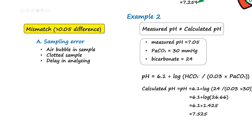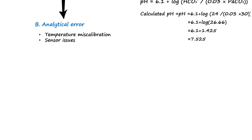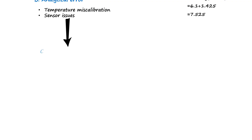If sampling error is unlikely, the next step is to consider technical problems with the ABG machine, including calibration or sensor issues. We have discussed these issues in the ABG sampling video. Finally, if technical errors are ruled out, the mismatch may be due to true pathological causes such as the presence of unmeasured acids like lactate or ketones, which can disturb the acid-base balance in ways not fully captured by the standard bicarbonate and carbon dioxide measurements.